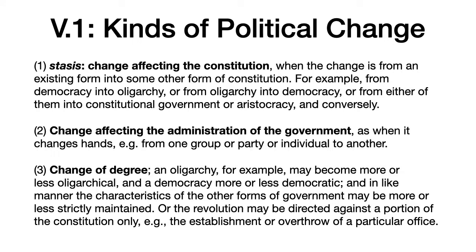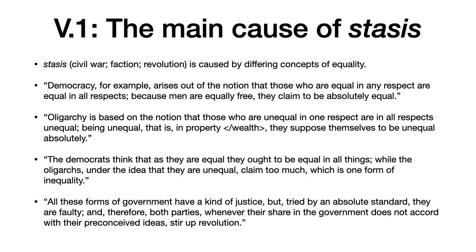Of those three kinds of change, Aristotle discusses each of them and how they relate to each other in this book. The first topic — and again the most important — is stasis and its main causes. Stasis means civil war, as opposed to a foreign war, but also revolution, since Aristotle thinks of it as a cause of change of the entire constitution, but also faction, because the main cause of stasis is one group — whether a minority or a majority — pushing their own interests so far that it actually distorts and changes the kind of constitution.